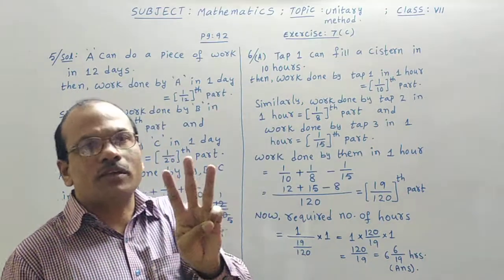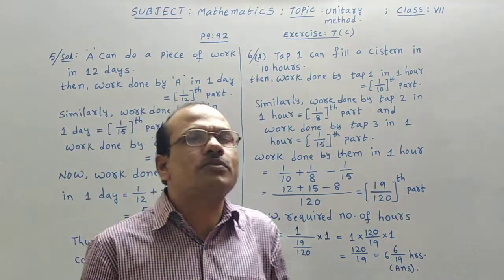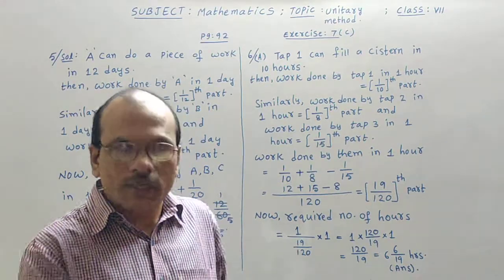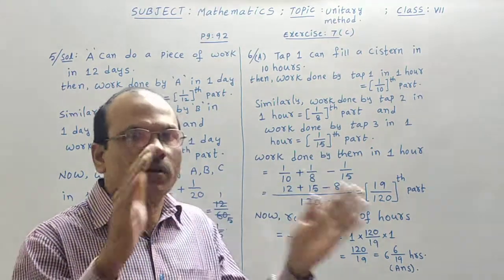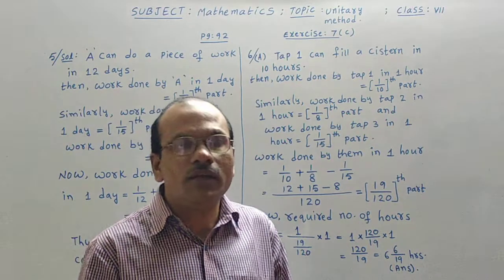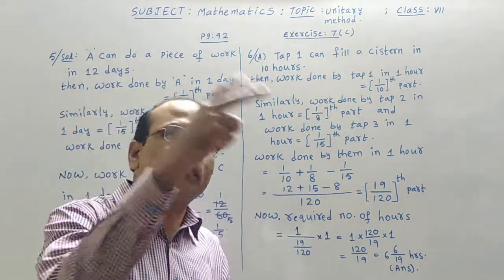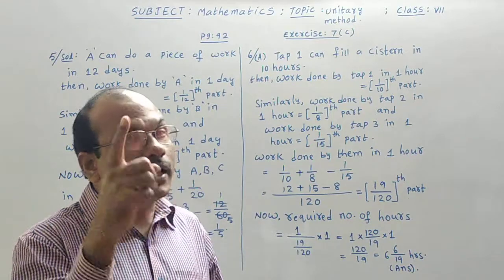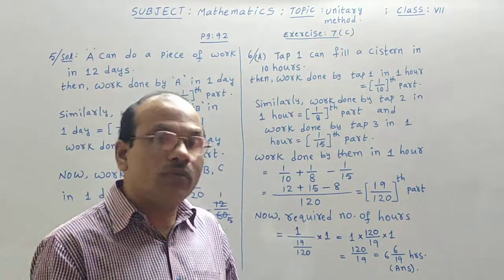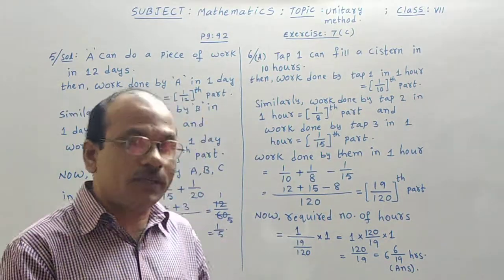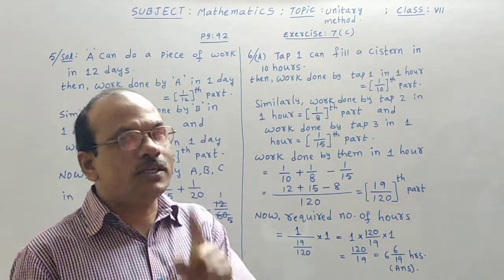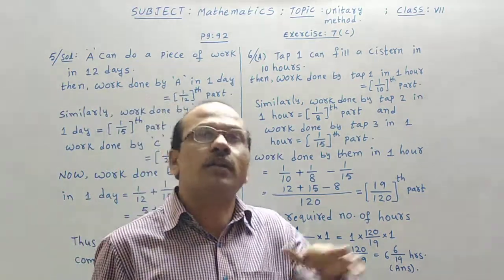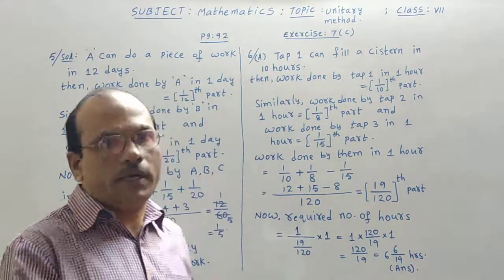Here a tap. Three taps are there. Usually, taps are used to fill the containers or the tank. Here is a cistern. One type of tank that was. Cistern is given. Two taps are in the work of filling the cistern or filling the tank. But another third tap is in the work of removing the water from it, emptying the tank. The job of the third tap is it will empty the tank.